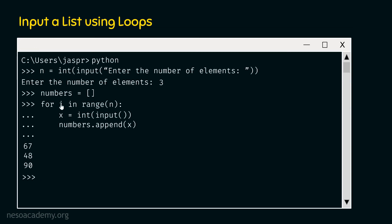Let's check whether the list has received all the inputs. We type 'numbers' and hit enter. We get the list with three items: 67, 48 and 90. This is exactly what we were expecting — a list with a total of three integer items.